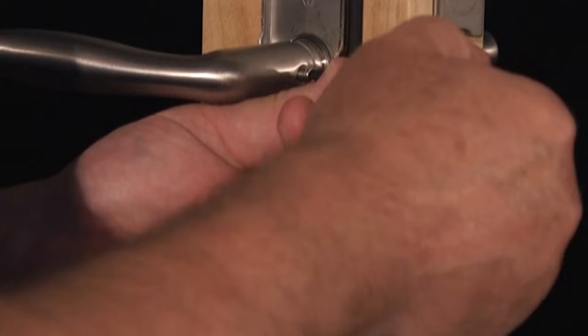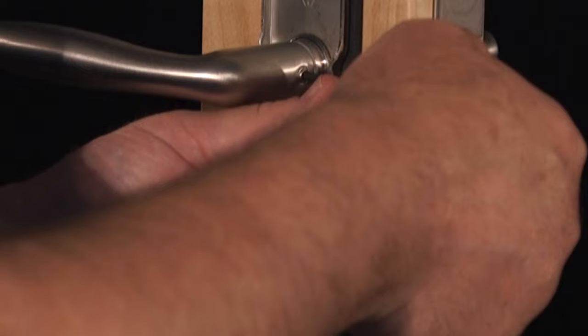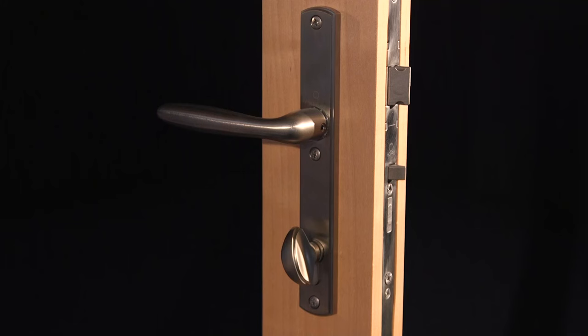Now, push the interior handle onto the shaft while holding the exterior handle in place and tighten the screw until the head of the screw is at least flush with the handle.